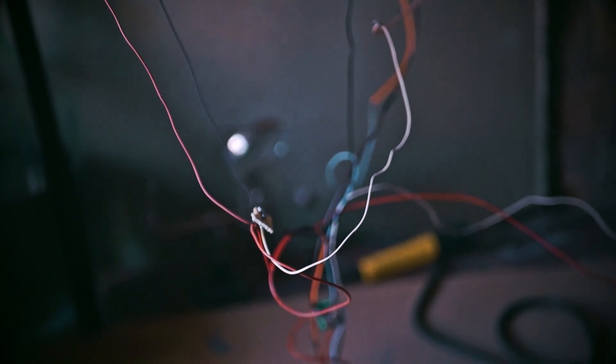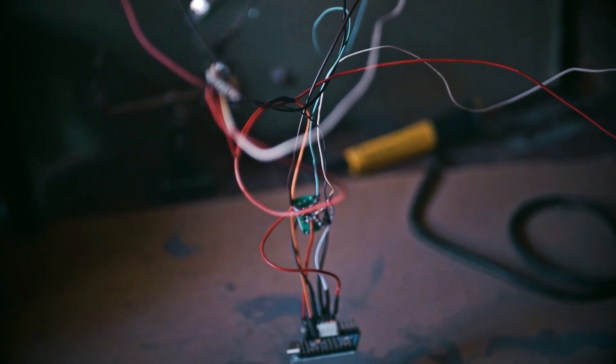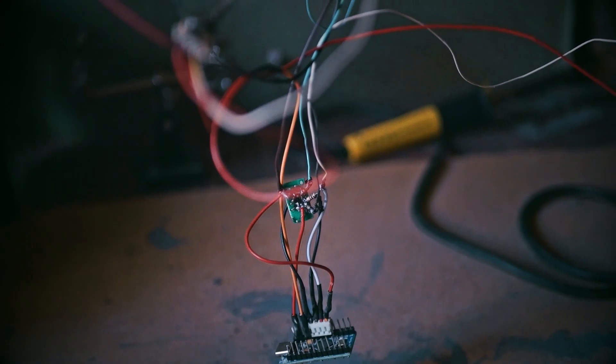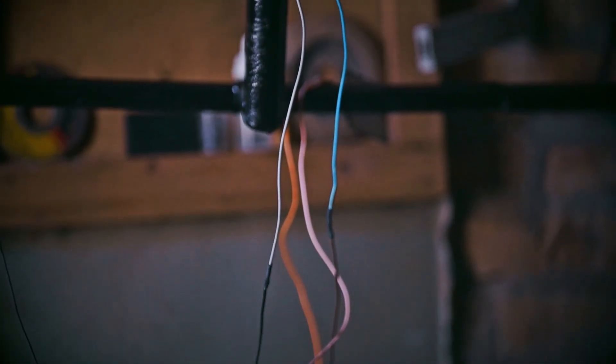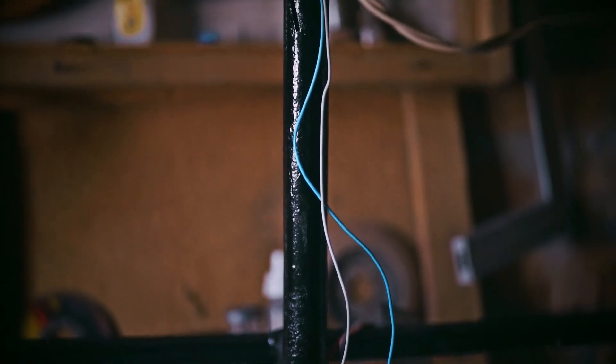So everything is assembled together, everything is painted and the wiring is done. Let's take a look at my wiring. I have two wires coming from each of the drums and everything is going through the resistors to Arduino.